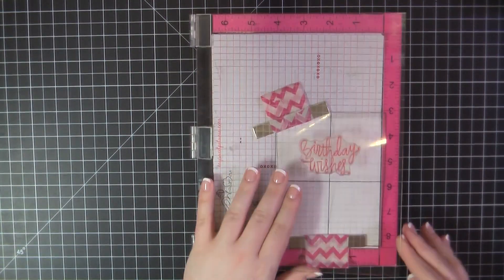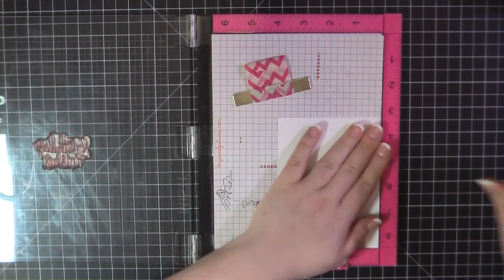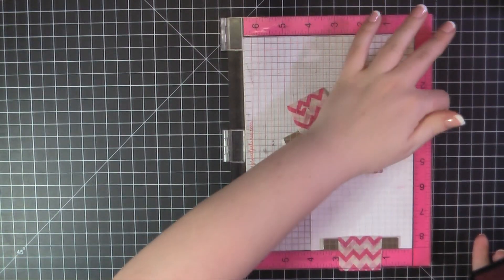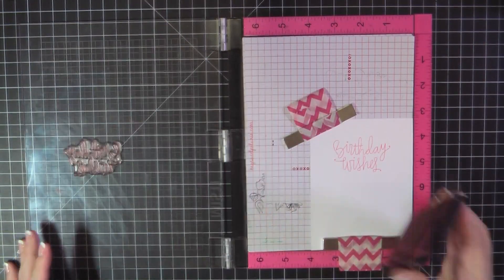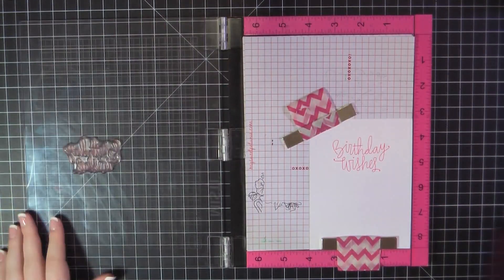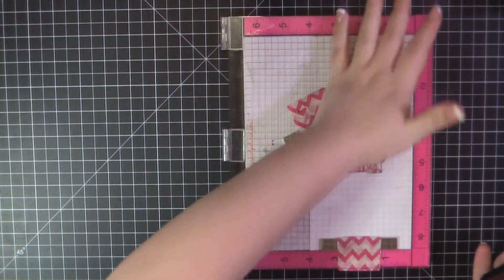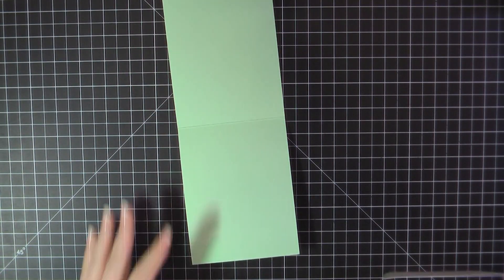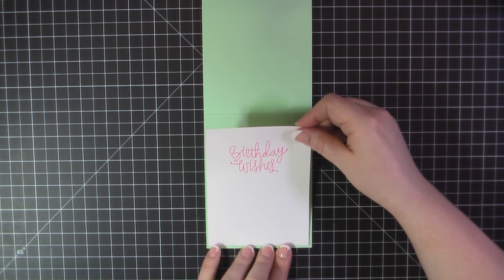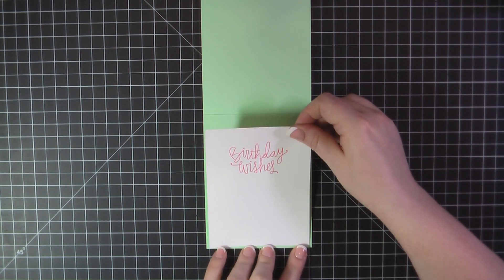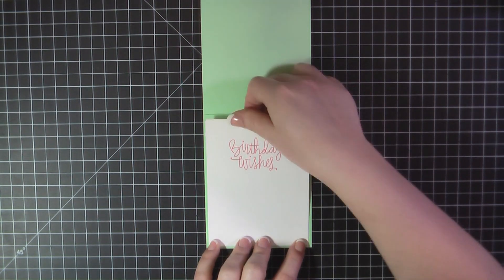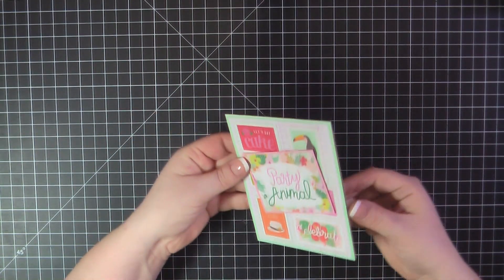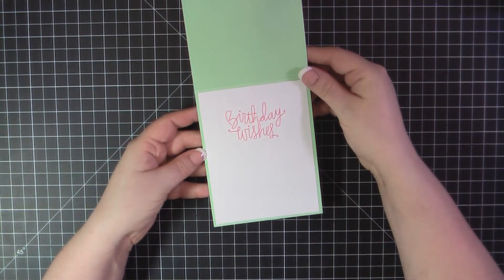For the inside, I'm again on a Neenah Panel Trim 2, 4 by 5 and a quarter. I'm going to stamp out the sentiment Birthday Wishes. This is from Simon Says Stamp Birthday Bits. And I'm using Lawn Fawn Peachy Keen ink for this. I'll go ahead and add some ATG to the back of that panel and place that on the inside of my card base. And that will complete card number three.